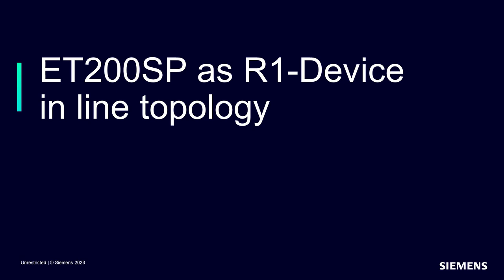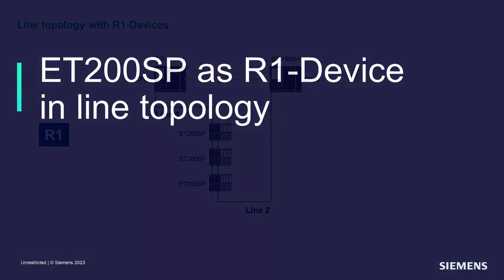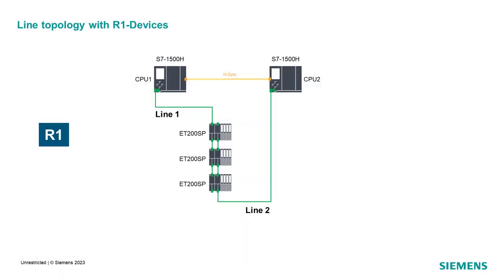As an example, we will use the line topology. This topology consists of a redundant controller S7-1500H, a redundant network in line, and ET200SP stations as R1 devices. By design, a station R1 has a redundant interface module on board. The first interface module belongs to line 1 and the second one to line 2.